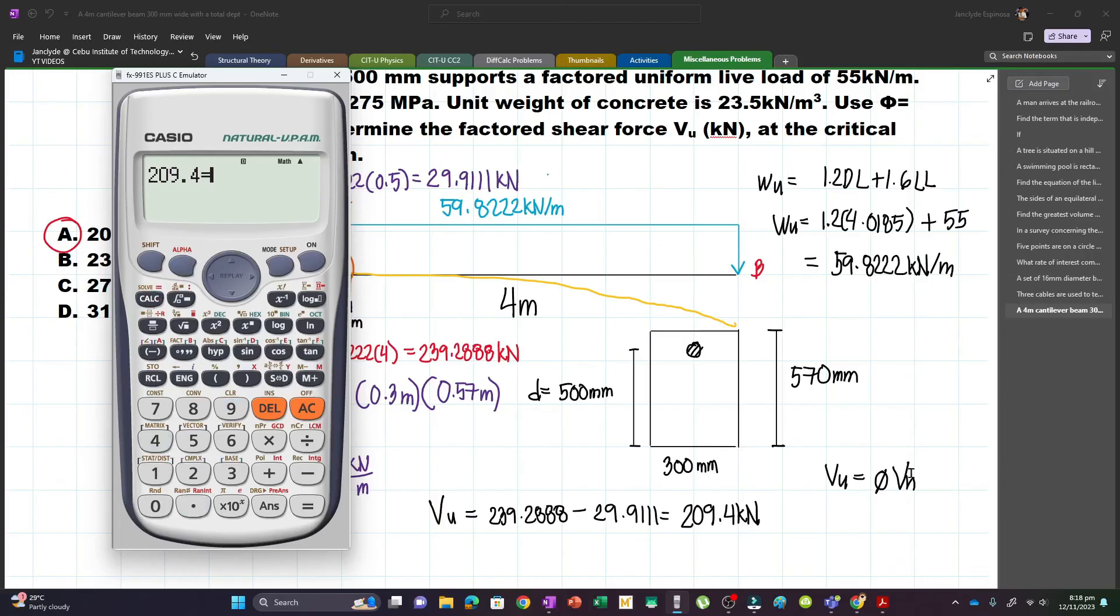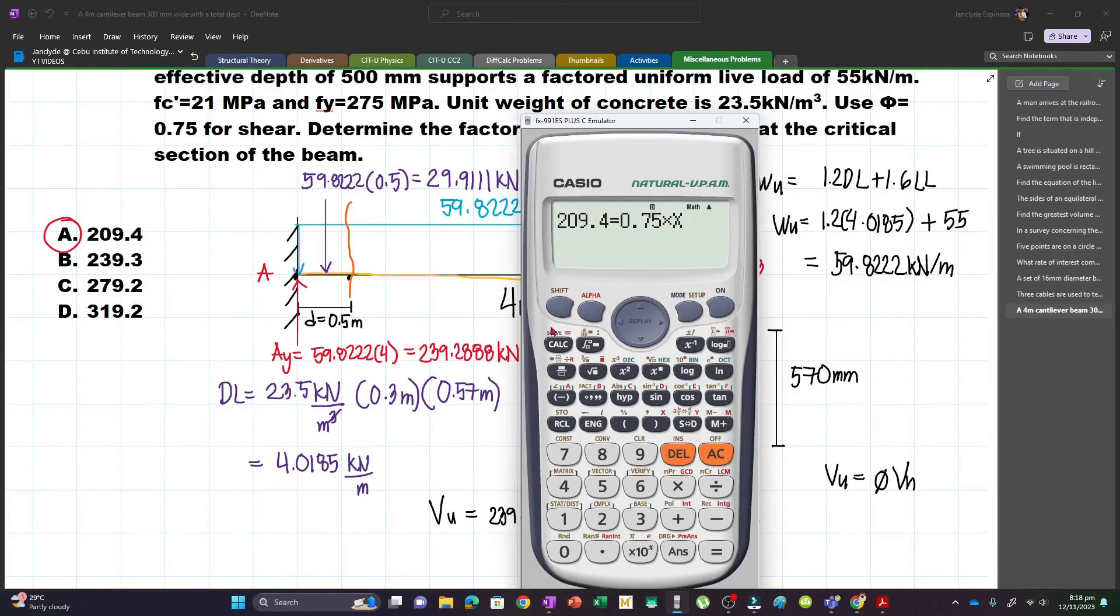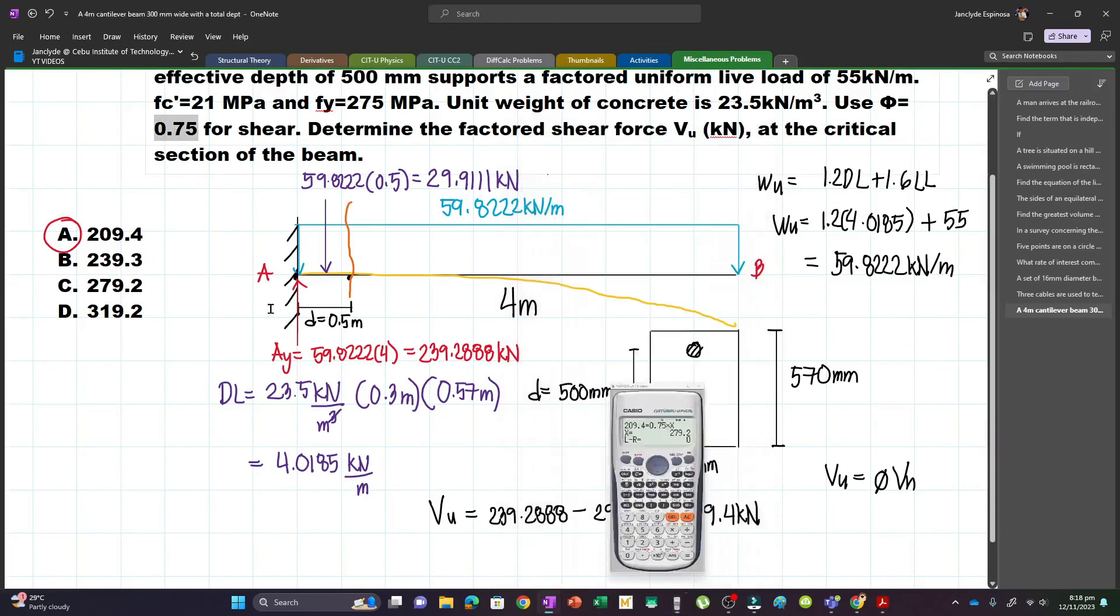VU is 209.4. Let's equate that to φ VN. Let's type φ which is this. Then solve for VN. The answer will be 279.2, which is in the choices.